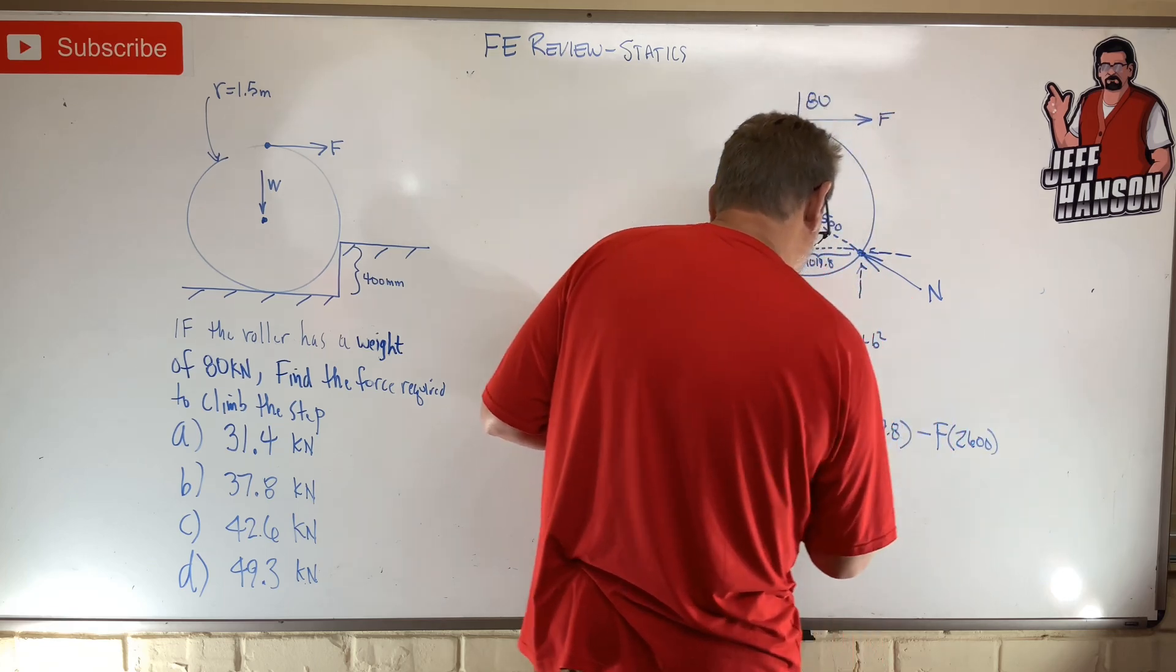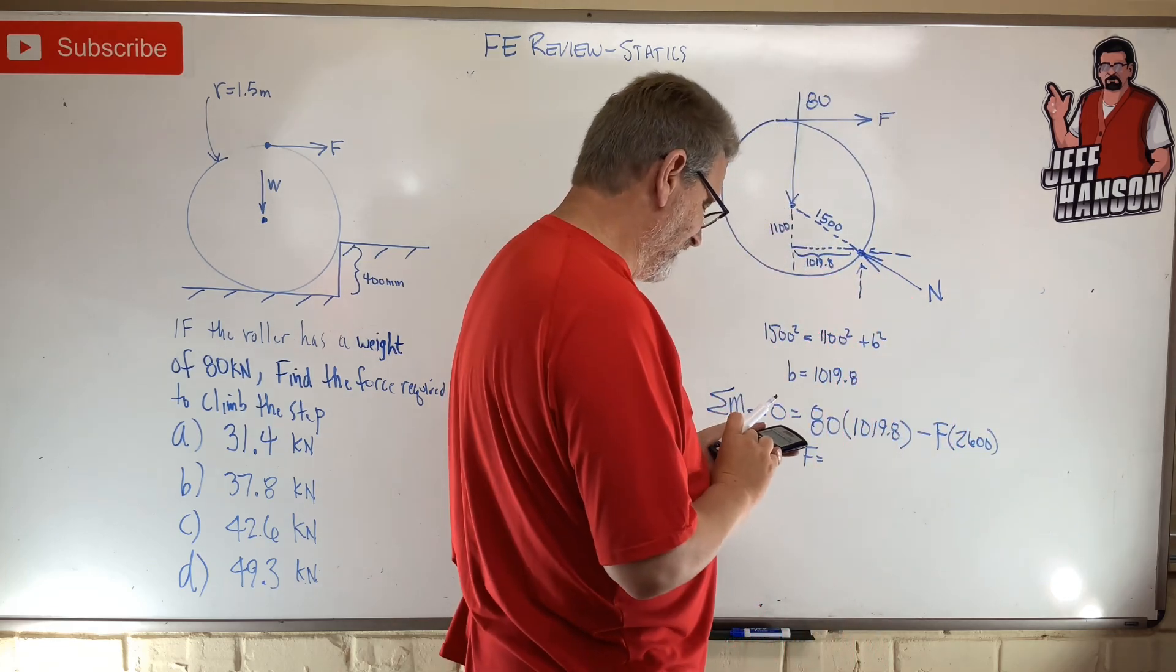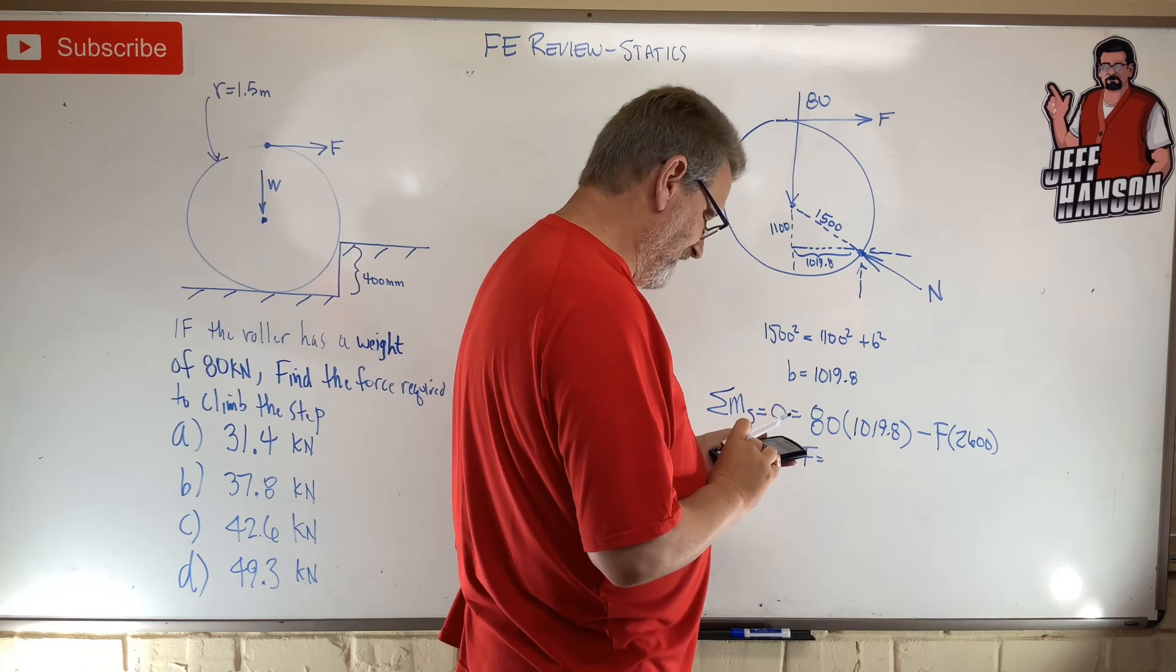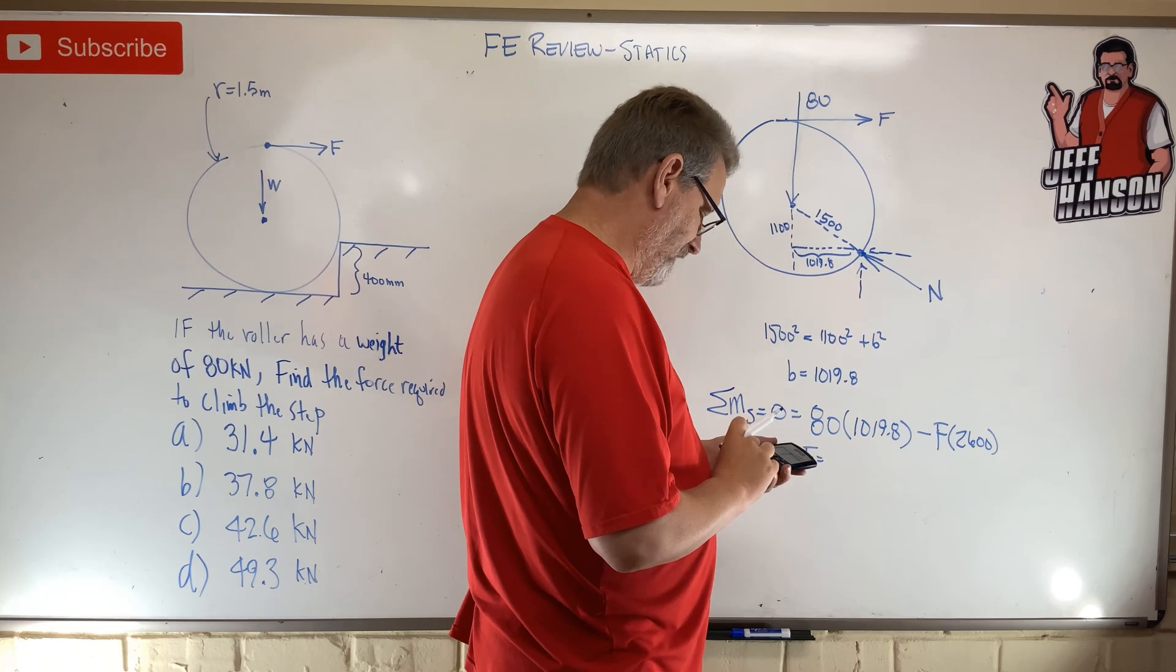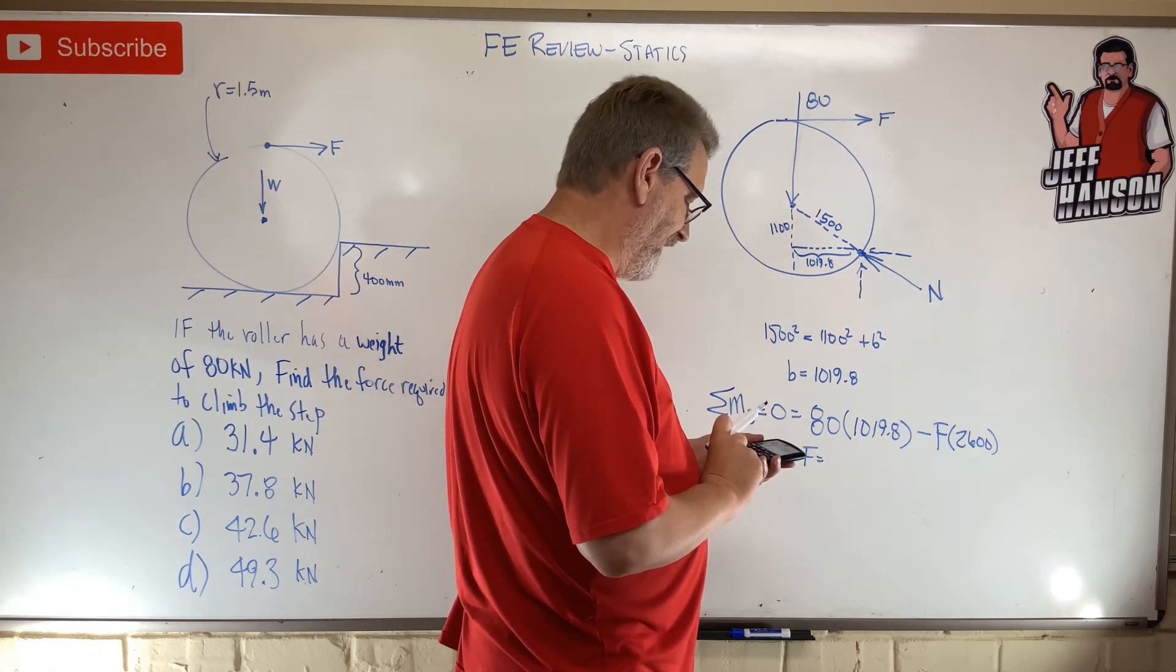So F is equal to, move that to the other side, let's see, 1019.8 times 80 equals, divided by 2600, equals bam.